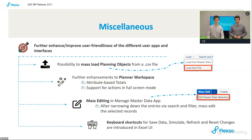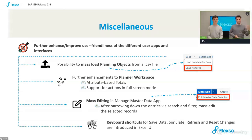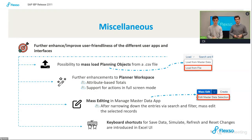These improvements definitely make life as an IBP planner more enjoyable. The aim of IBP and SAP is to further enhance user-friendliness across different apps — the Excel UI on one hand, and the Planner Workspace becoming more and more usable and user-friendly. All these enhancements to the different parts of the IBP landscape will bring ease of use to customers and business users.